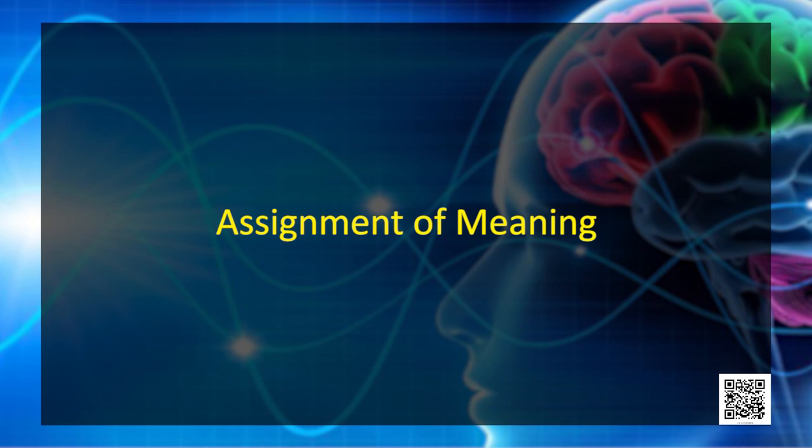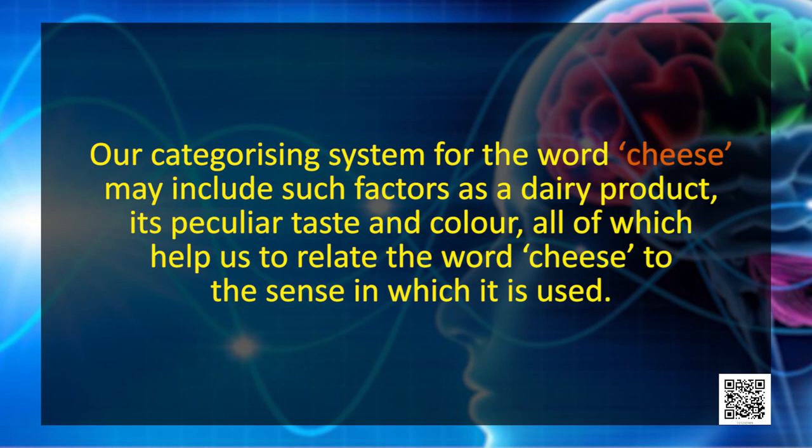The next component is assignment of meaning — the process of putting a received stimulus into some predetermined category, which develops as we acquire language. We develop mental categories for interpreting messages we receive. For instance, our categorizing system for the word 'cheese' may include such factors as it being a dairy product with a peculiar taste and color — all of which help us relate the word to the sense in which it is used.